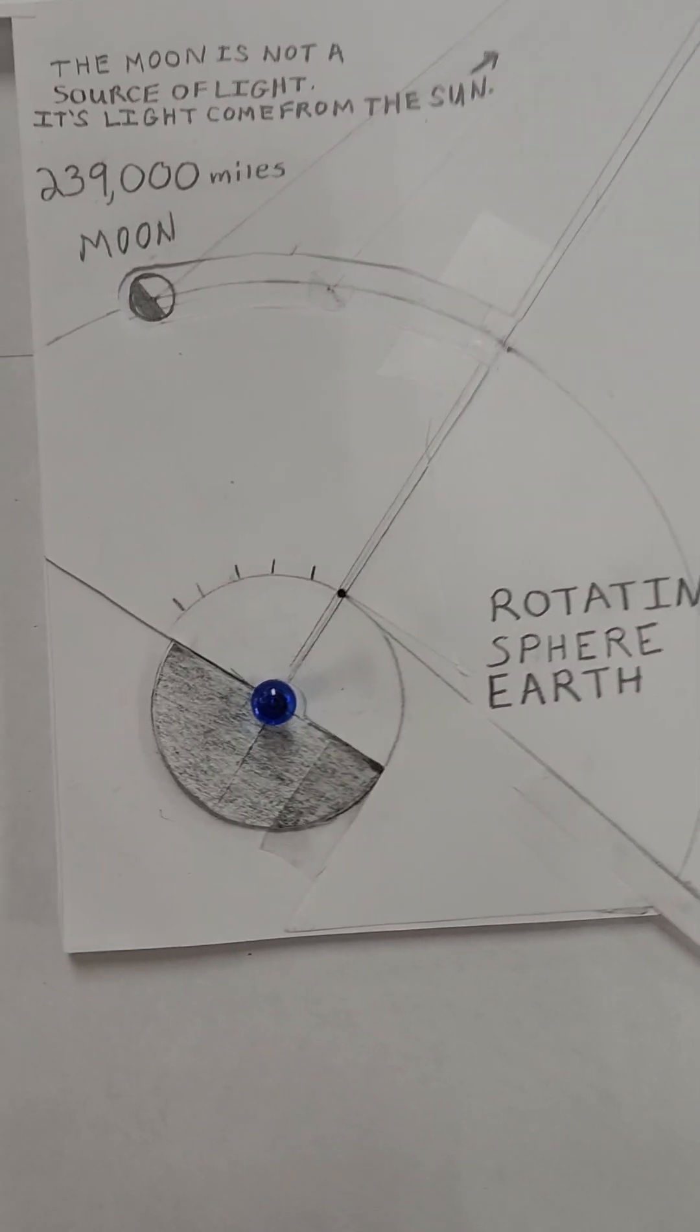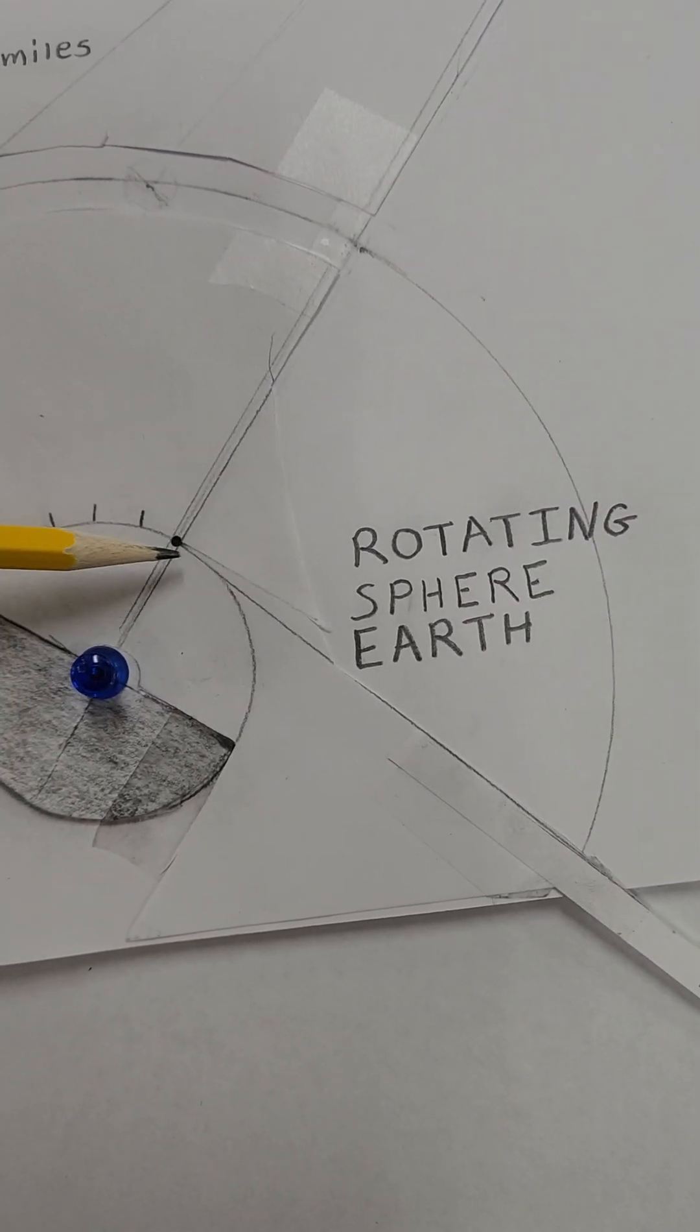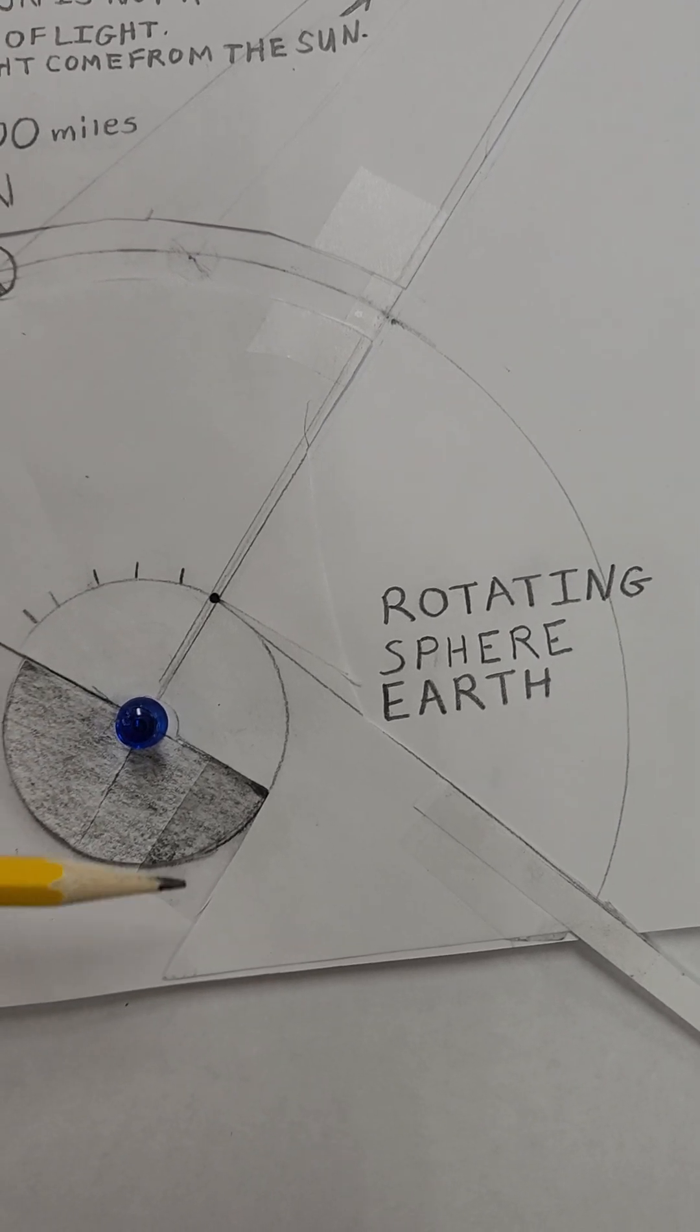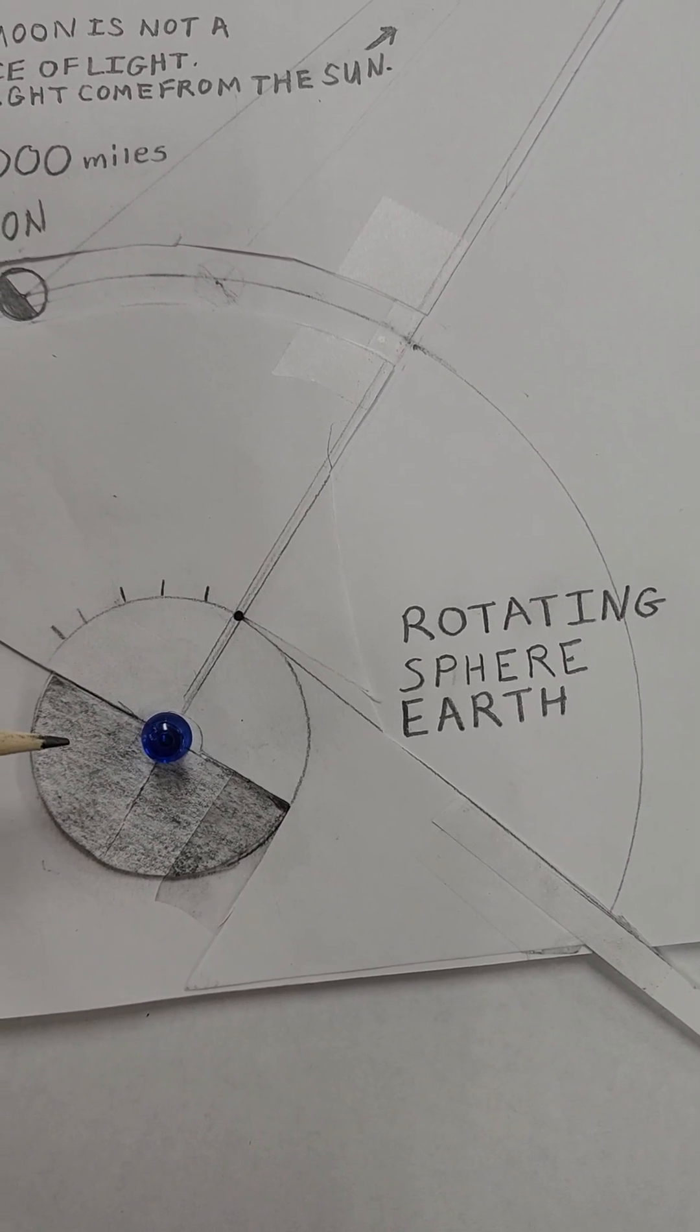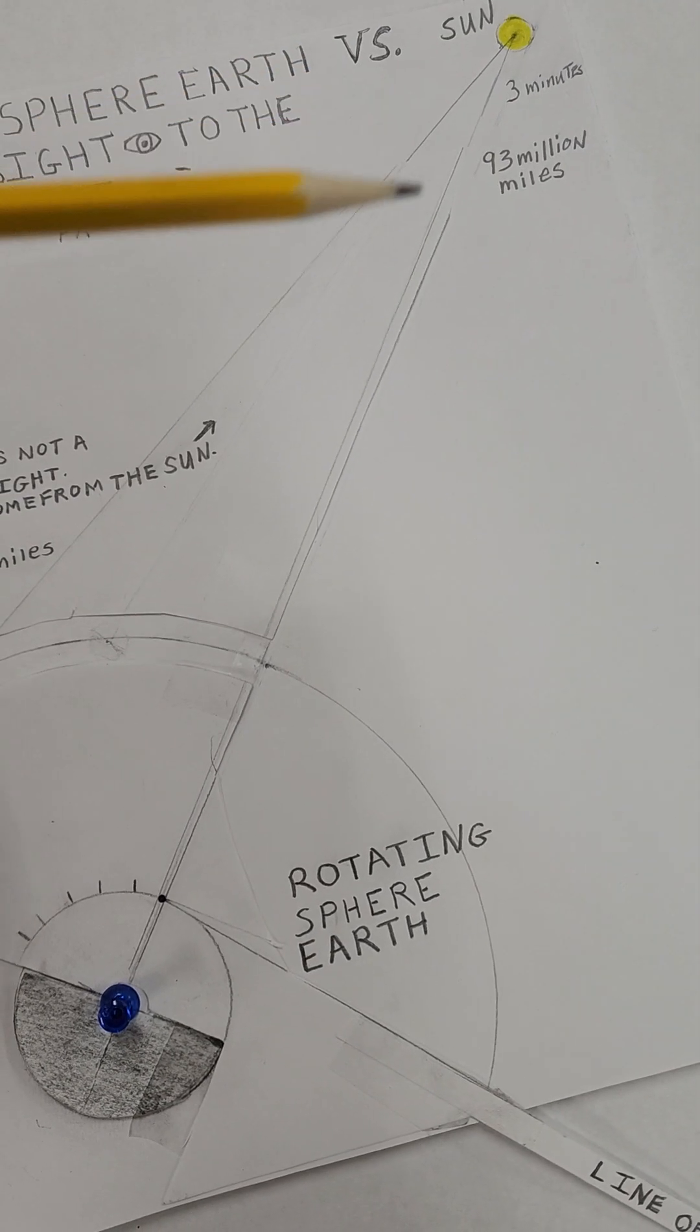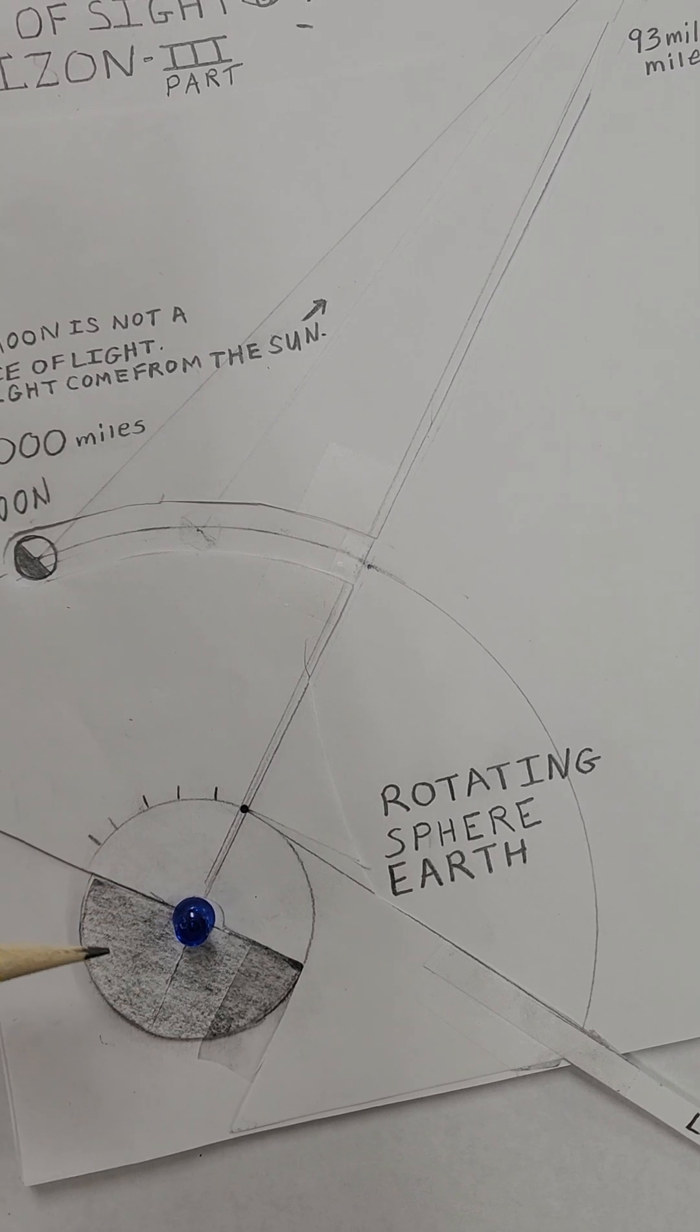And the sun over there is 93 million miles away. And there's the earth. And there's you, directly under the sun. I've got the dark side of the earth noted here. The sun lights up this side of the earth, and the other side is dark.